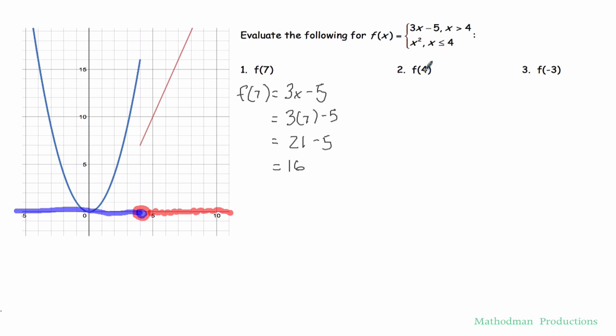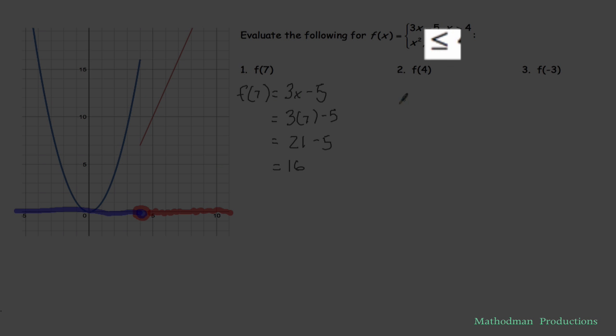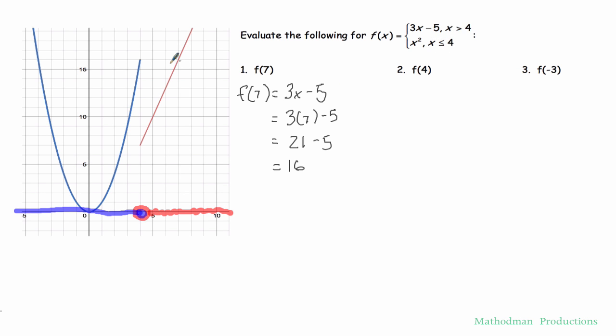Alright, second question. This one's kind of tricky. It's saying, what is the function when x equals 4? It's kind of tricky because both of these have a 4, but only one of them equals 4. And if you were thinking that it's the second equation, then you're exactly right because of this equal sign right there. So to evaluate f of 4, I'm going to use x squared. Plug in 4 for x. So x squared, put a 4 in there, and 4 squared equals 16.